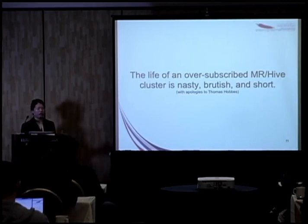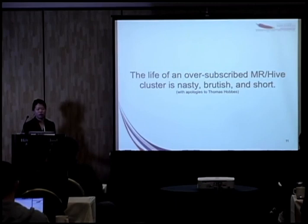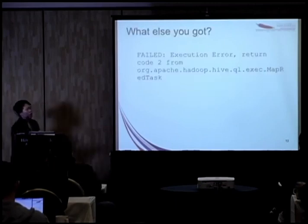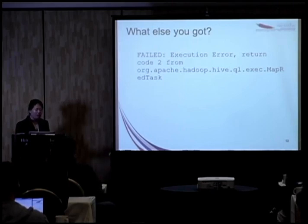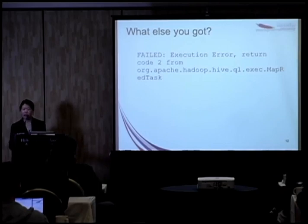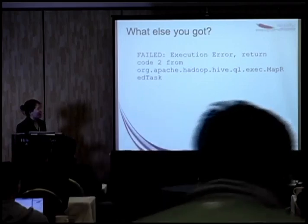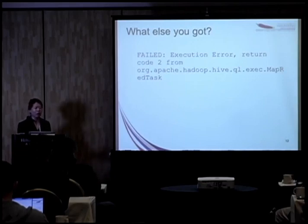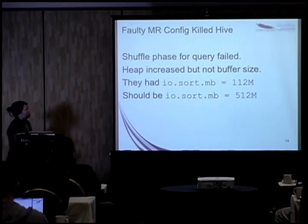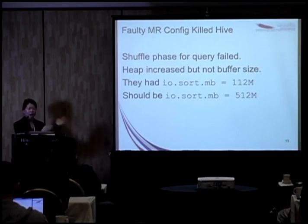If you're oversubscribing your cluster — running a MapReduce job alongside a Hive job — you're going to see failures. Here's a real error message from a customer who upgraded their Hadoop cluster and previously working Hive jobs suddenly started failing. All they did was upgrade, and they didn't even want to. I had a very angry customer over the weekend. All I had to go off of was return error code 2, and from that I needed to deduce what went wrong. It turned out the shuffle phase — between the Map and Reduce phases — was the key to figuring out the puzzle.